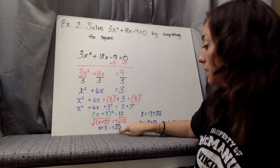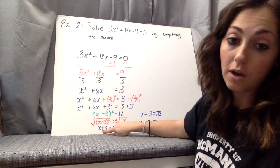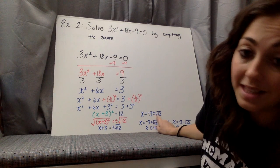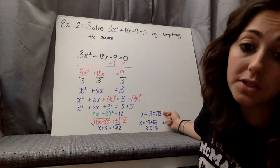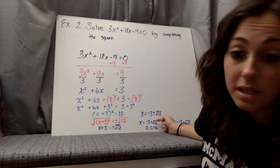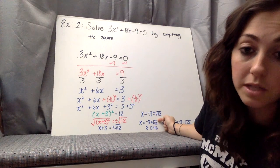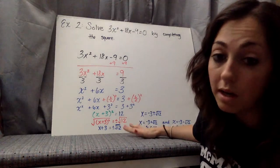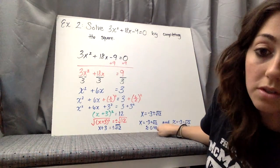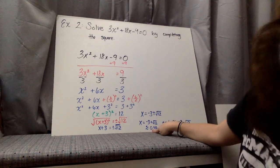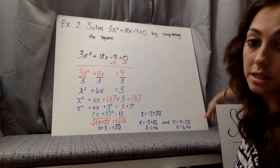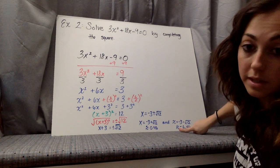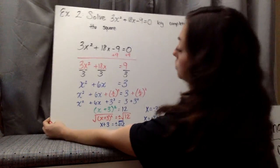So we have x plus 3 equals plus or minus the square root of 12. We subtract 3 from both sides, giving us x equals negative 3 plus or minus the square root of 12. If it says simplify, this is your answer and you're done. However, most problems expect us to find decimal approximations for the x-intercepts. Negative 3 plus the square root of 12 is approximately 0.46. The other solution, x equals negative 3 minus the square root of 12, is approximately negative 6.46.